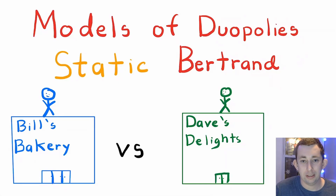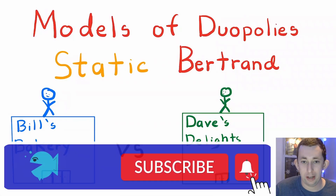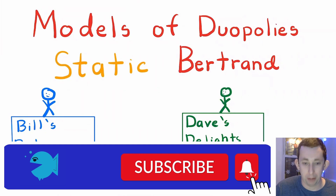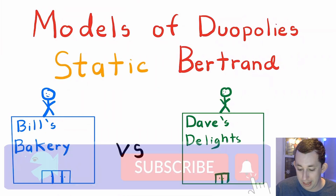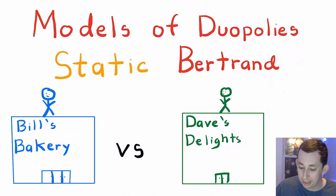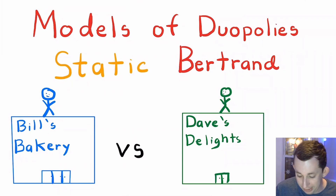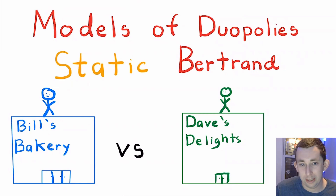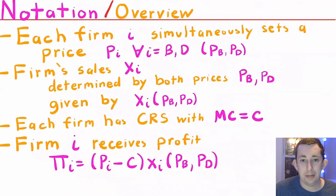Hi guys, welcome back to 'In Case of Econ Struggles.' Welcome to another market structure video. Today we are talking about duopoly — specifically the Bertrand model. We're going to talk about the static Bertrand model, so that's just one period. For this example, I'm going to have Bill's Bakery and Dave's Delights as the two firms in the model.